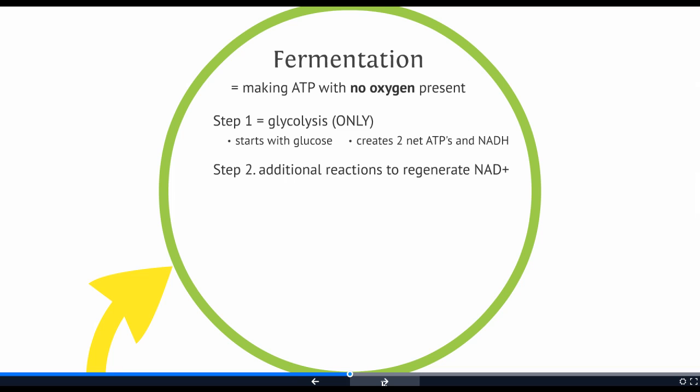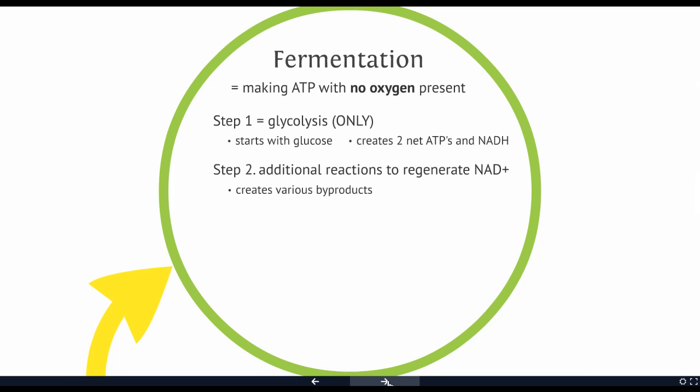Instead, we're going to go to a series of additional reactions, and they vary from organism to organism. This second set of chemical reactions is just intended to unload the taxi cab so that we have empty cabs to go back to work in glycolysis. Aerobic cellular respiration generates 36 to 38 ATPs per glucose, while fermentation with no oxygen only creates two ATPs per glucose, so it's much less efficient.